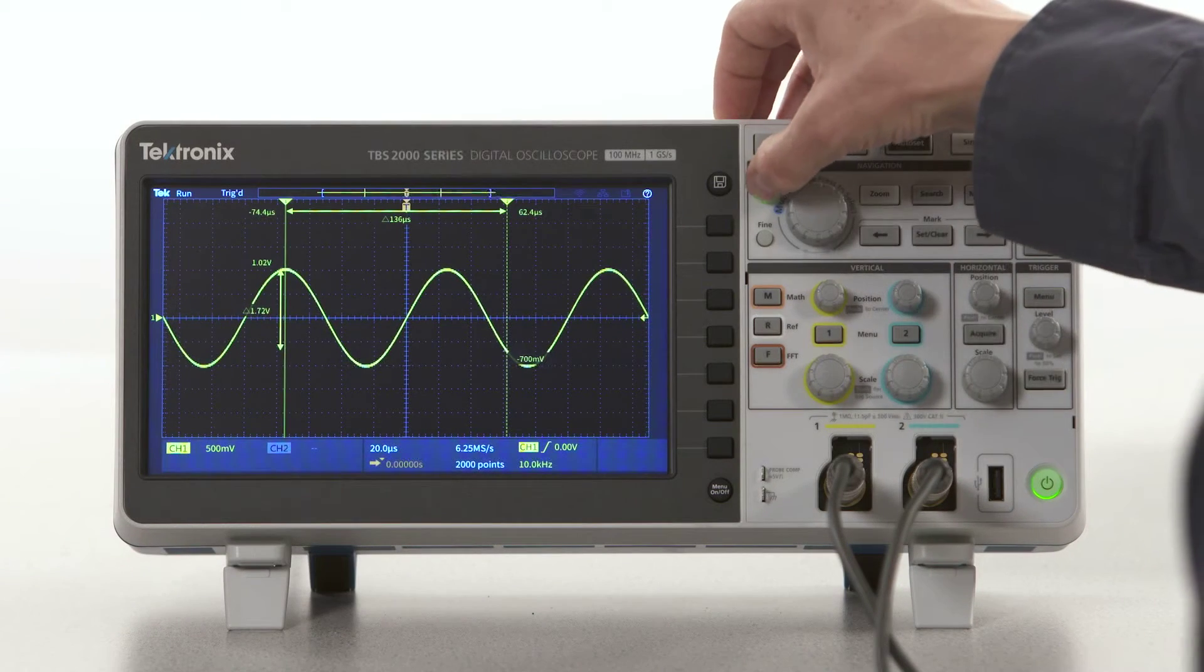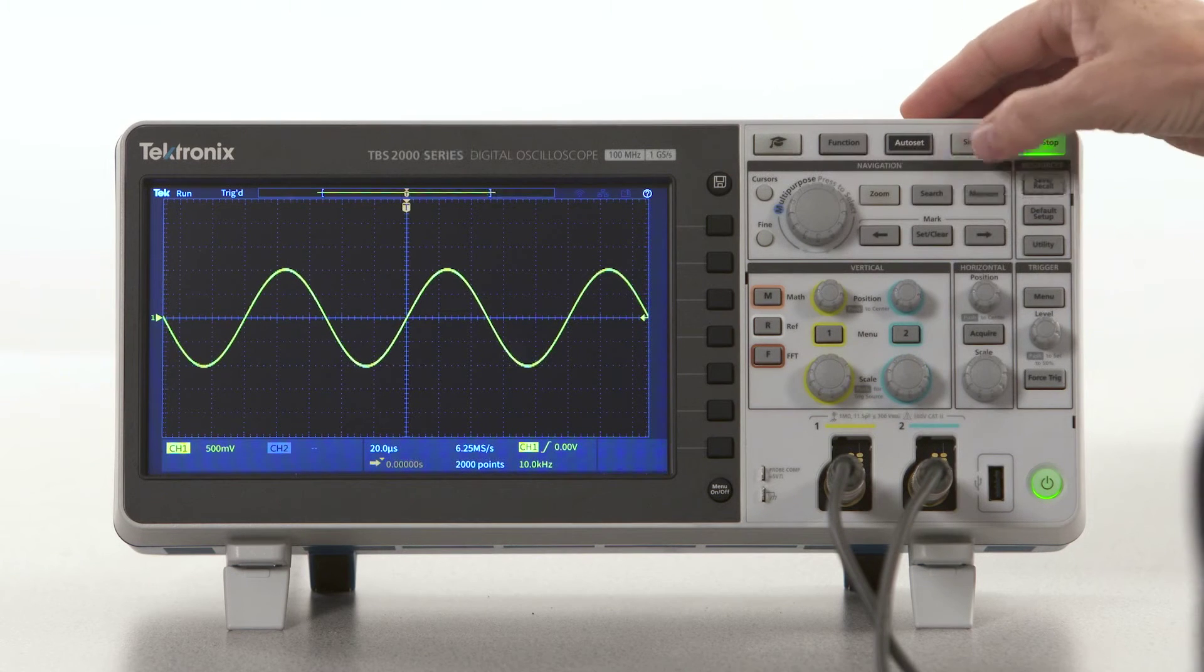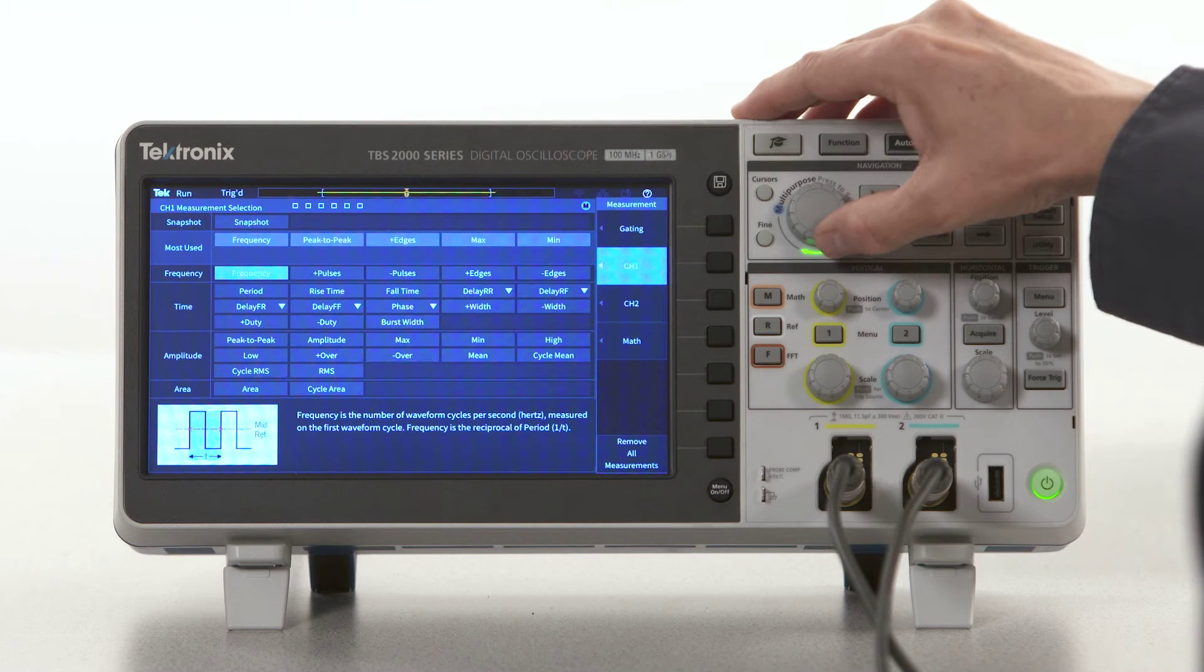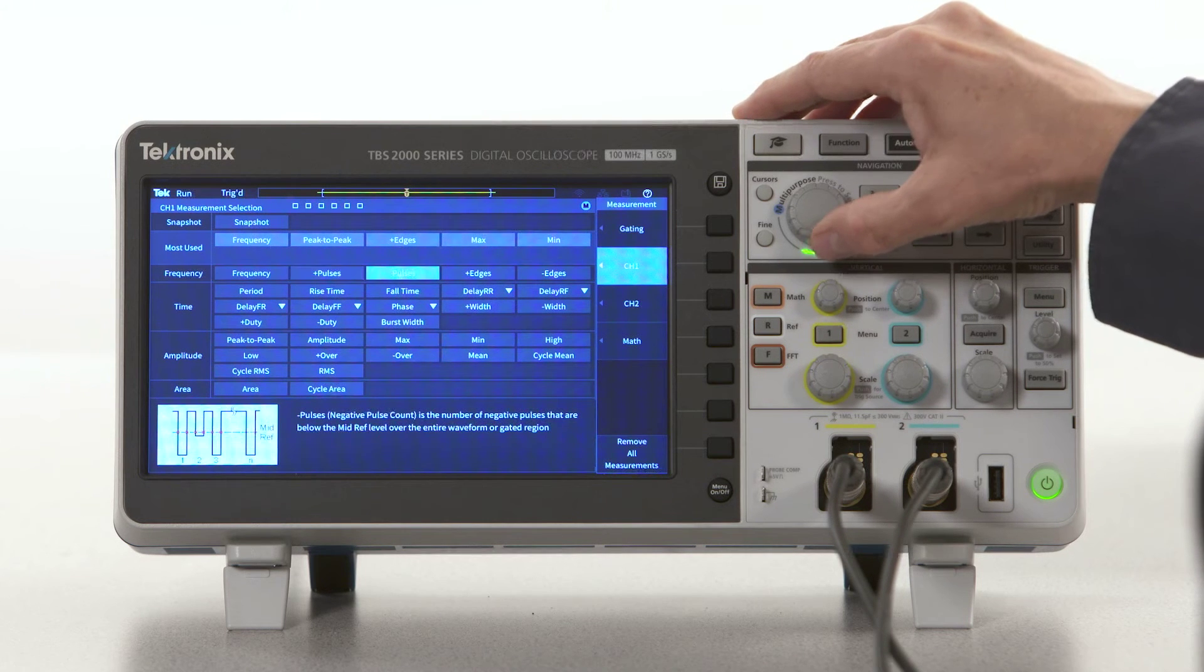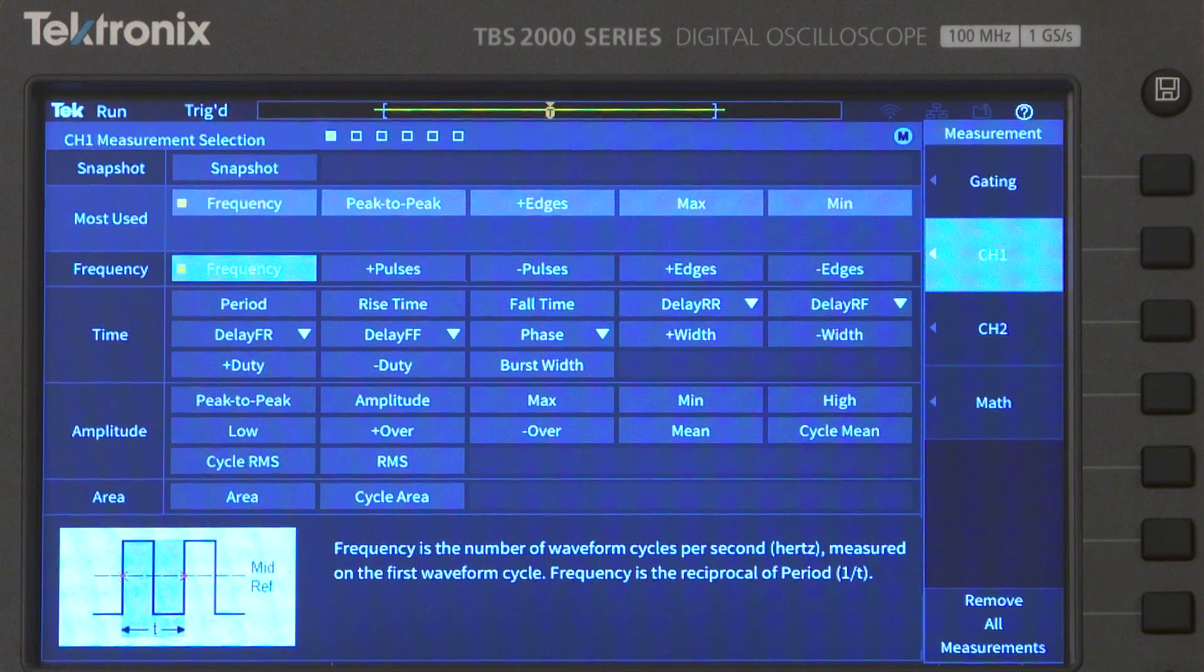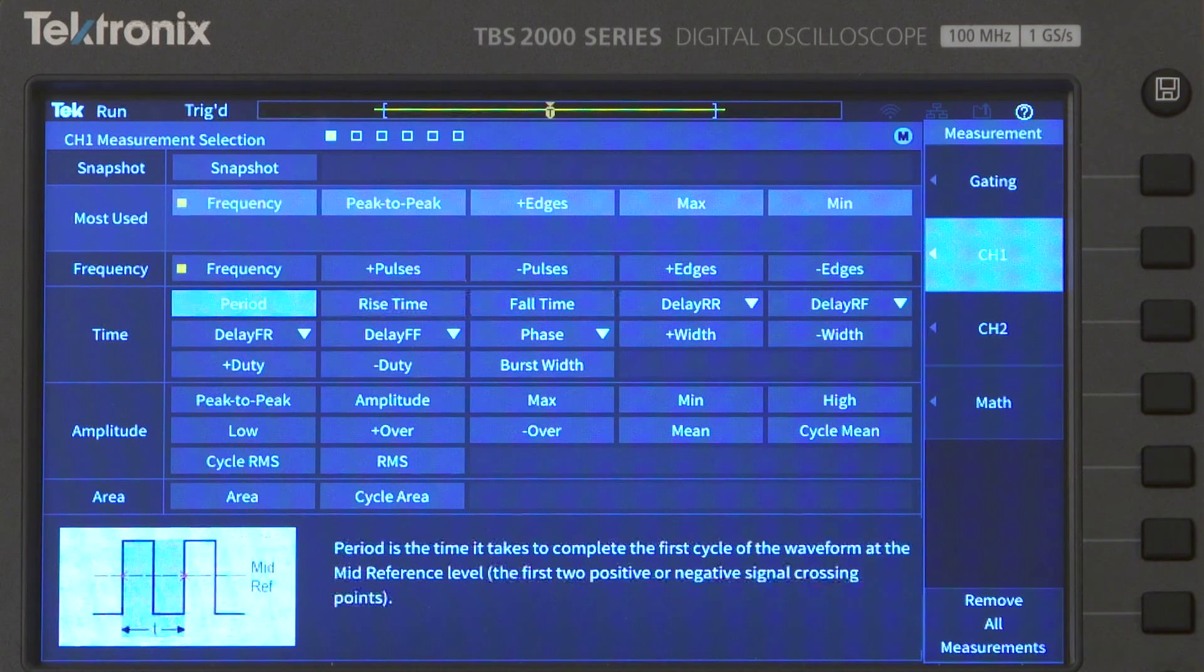Let's have a look at the setup. On this oscilloscope, the measurement function is activated by pressing the measure button. The measurement menu provides a categorized list of all the measurement functions available. I can scroll through the measurements and select the ones I want. On this scope, tips show up at the bottom to explain the differences between each measurement.